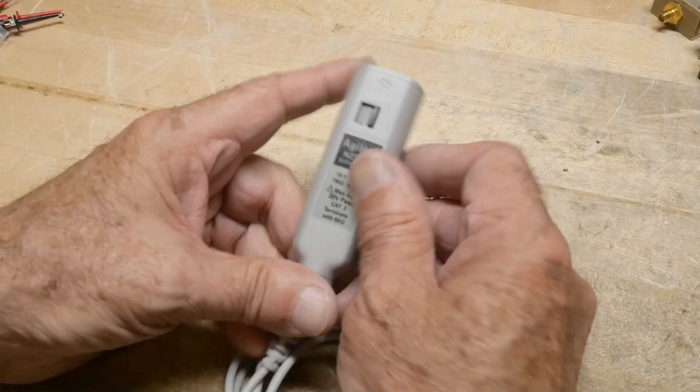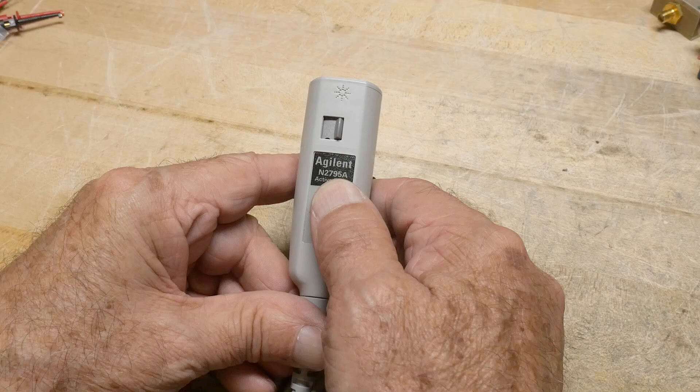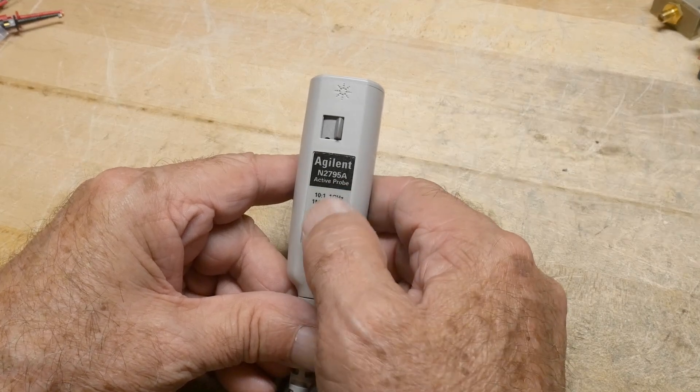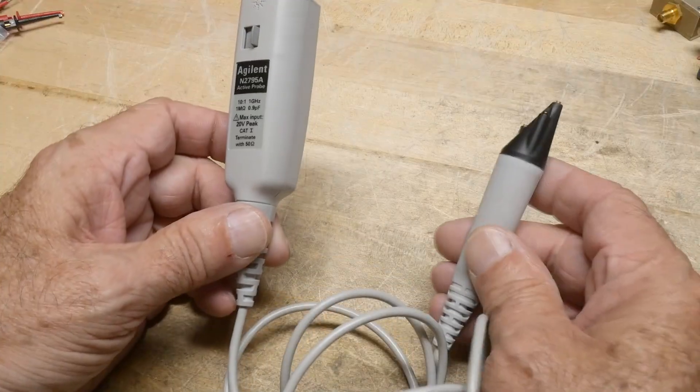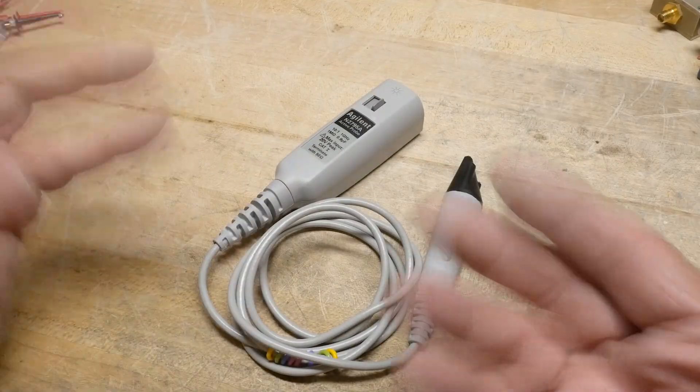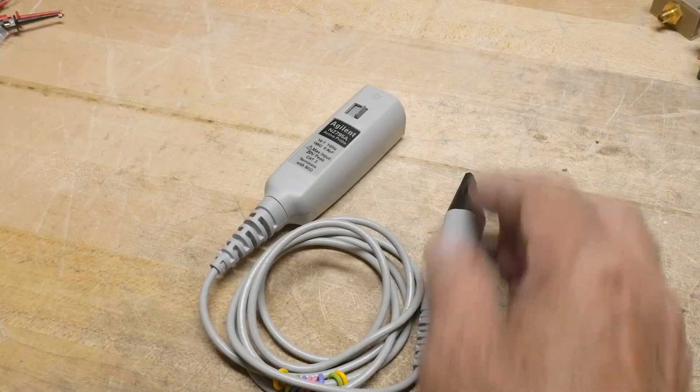If you don't know what these are, it's an active probe. This one is model number N2795A active probe. It's a one gigahertz probe, but it has a FET front end, so it's not just resistors. It actually has an amplifier in the probe itself.